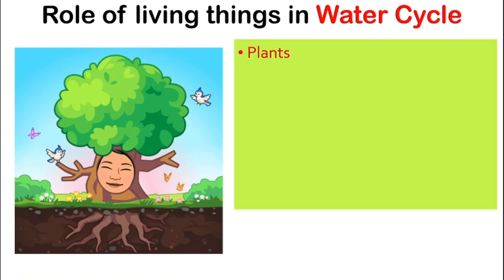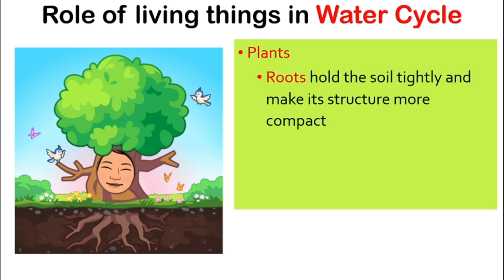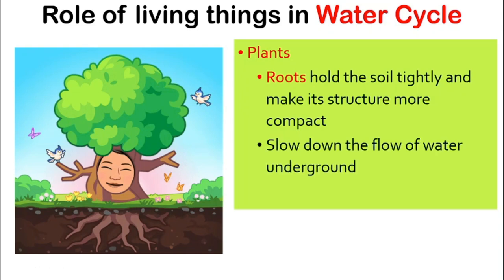The roots of the plants play a role too. The roots will hold the soil tightly and make the structure of the soil compact. When the structure of the soil is compact, the flow of water on the ground will be slowed down, and that will prevent soil erosion and hence prevent landslides.